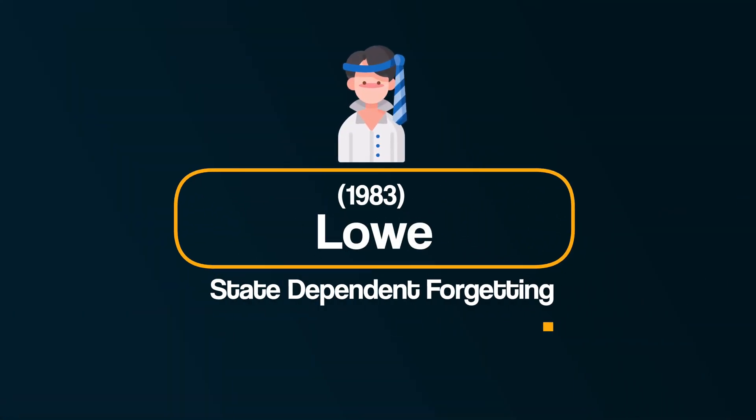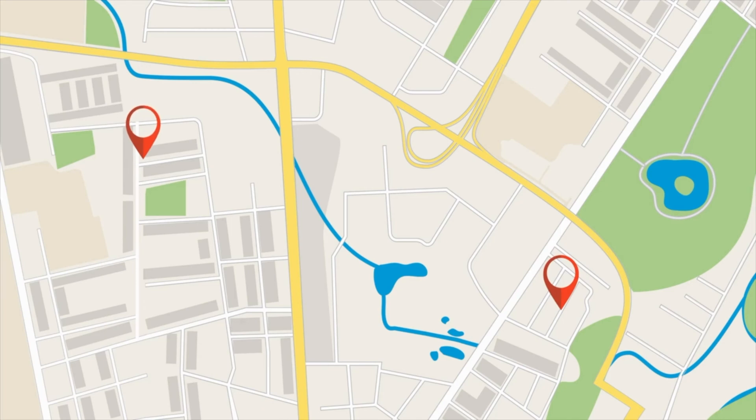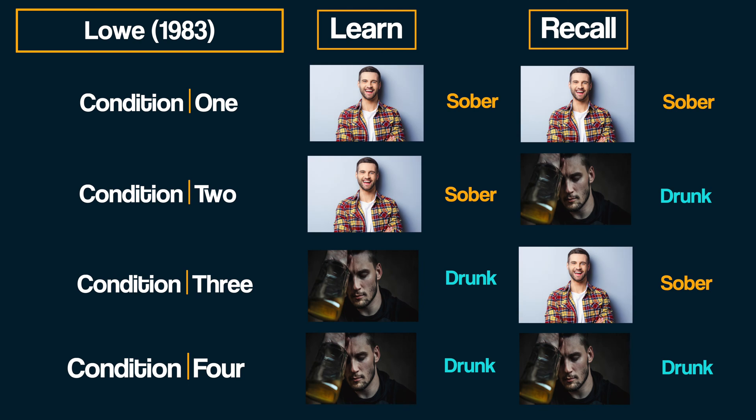For a second study demonstrating state-dependent forgetting, we have research into the effects of alcohol by Lowe in 1983. In this research conducted over two days, participants were asked on day one to memorize a geographical map and an audio description of instructions to follow a particular route on the map. Half of the participants were sober when they did this task, and the other half were under the effects of alcohol. 24 hours later during day two, their recall was tested in either the same or different states — the classic four conditions again. They found greater recall when the participant's internal state was the same at encoding and recall. Amazingly, they recalled more information when drunk if that was the state they were in when they encoded the information.